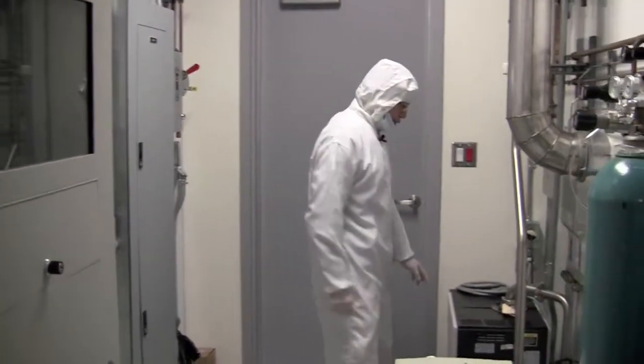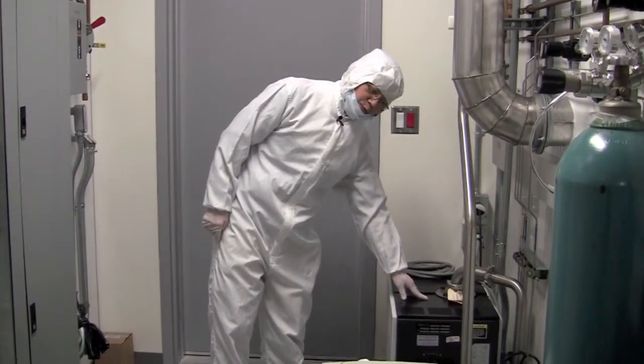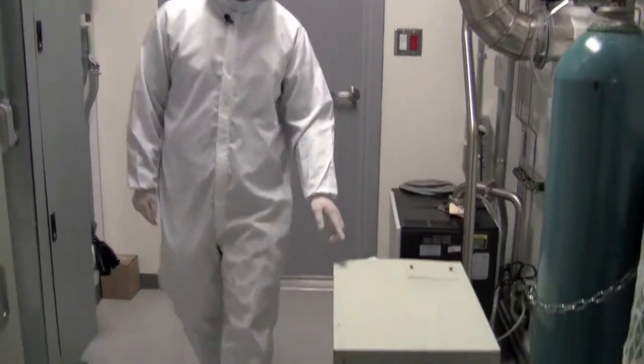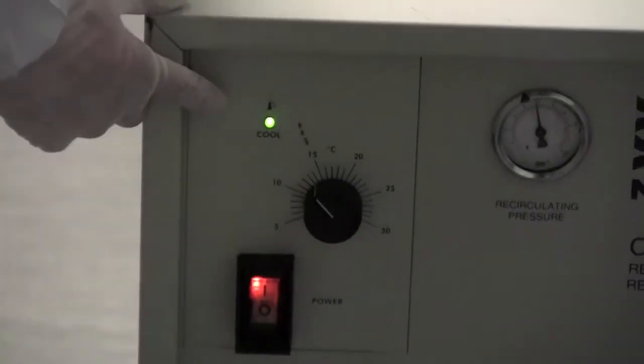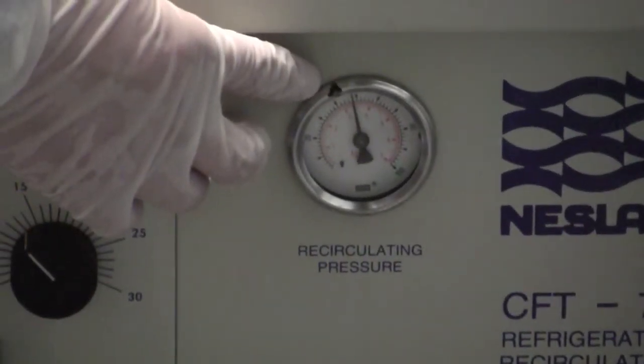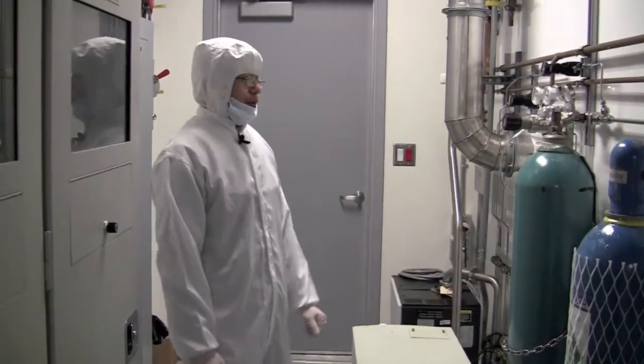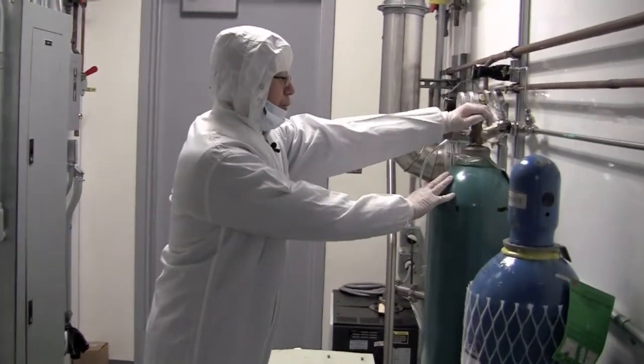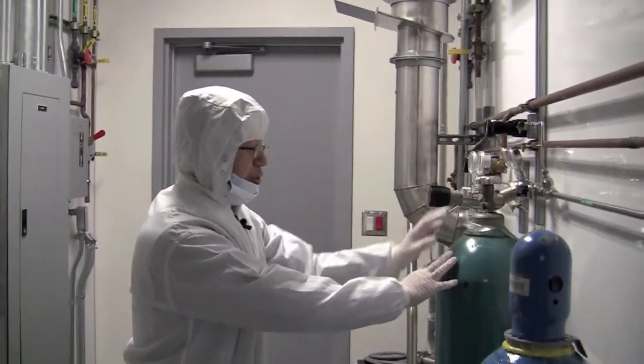For general users, we will first check the dryer pump is working. Check the chiller is on and the circulating pressure is pointing to the marked line. If everything is fine, we will counterclockwise open the valve of the oxygen tank.